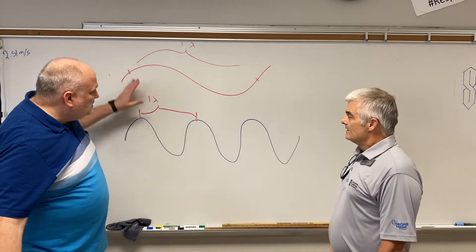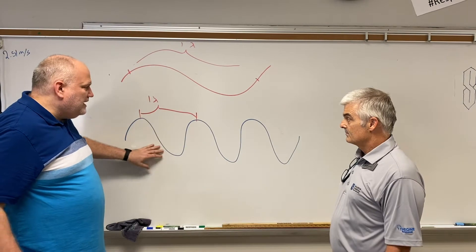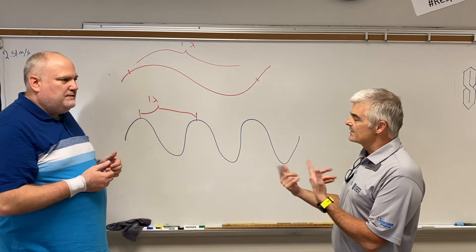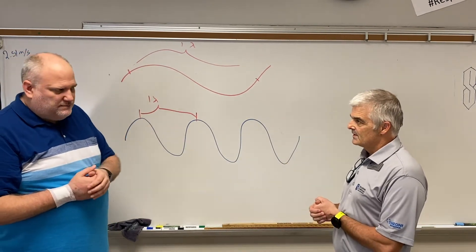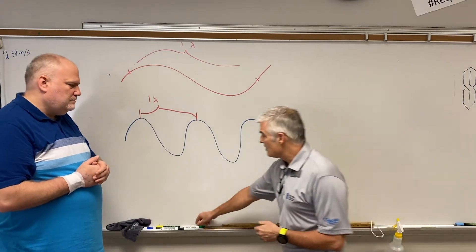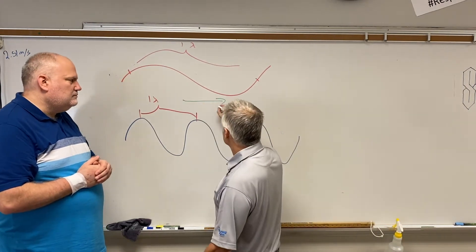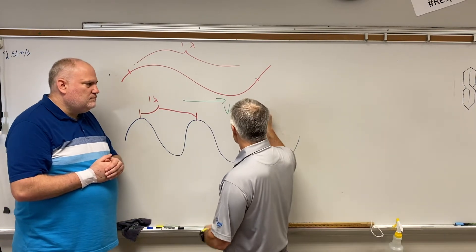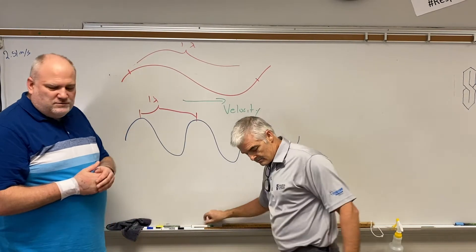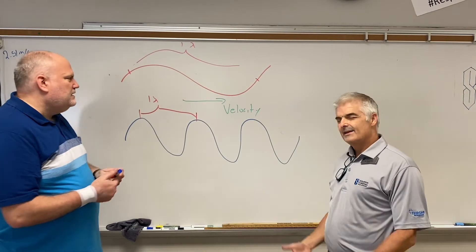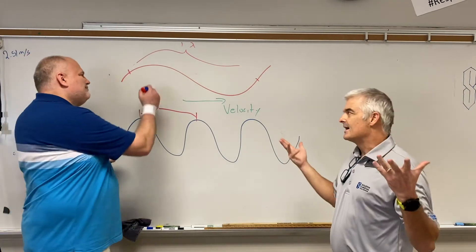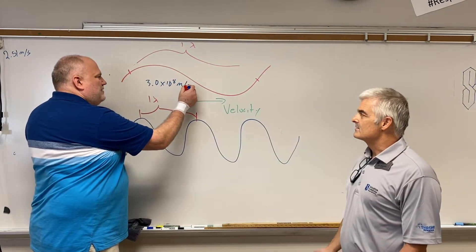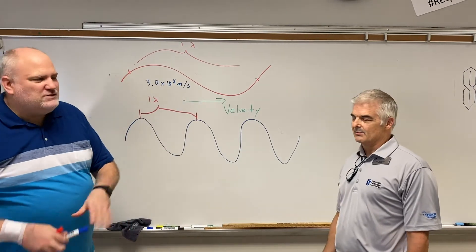The only difference between red light and blue light is that their wavelength is different. But what's the same? They all travel at the same speed — they all move with a velocity V. How fast? It's 3.0 times 10 to the 8 meters per second. That sounds like a lot.